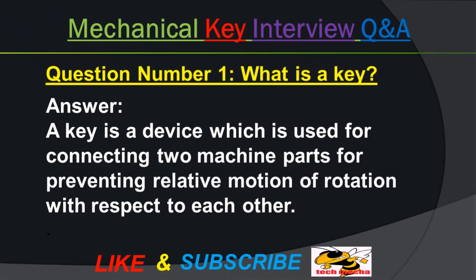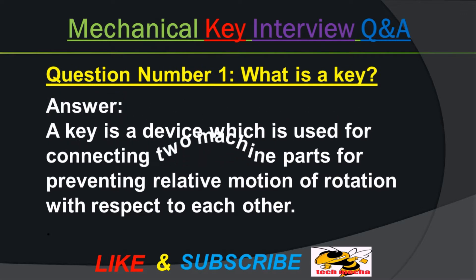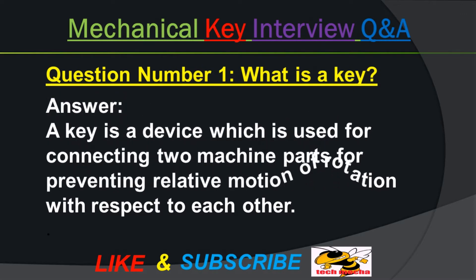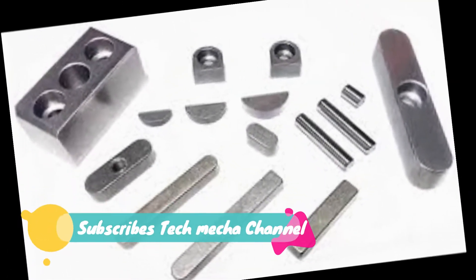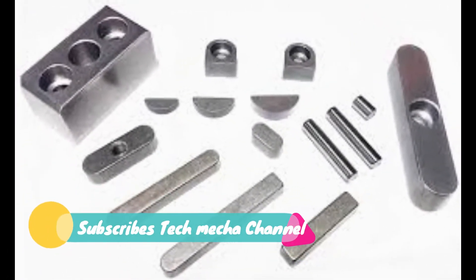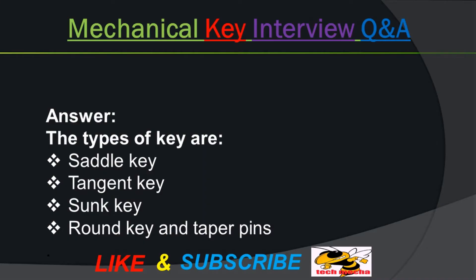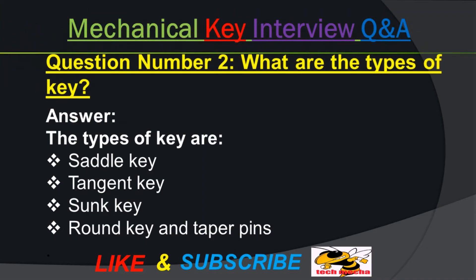Question number one: What is a key? Answer: A key is a device which is used for connecting two machine parts, for preventing relative motion of rotation with respect to each other.